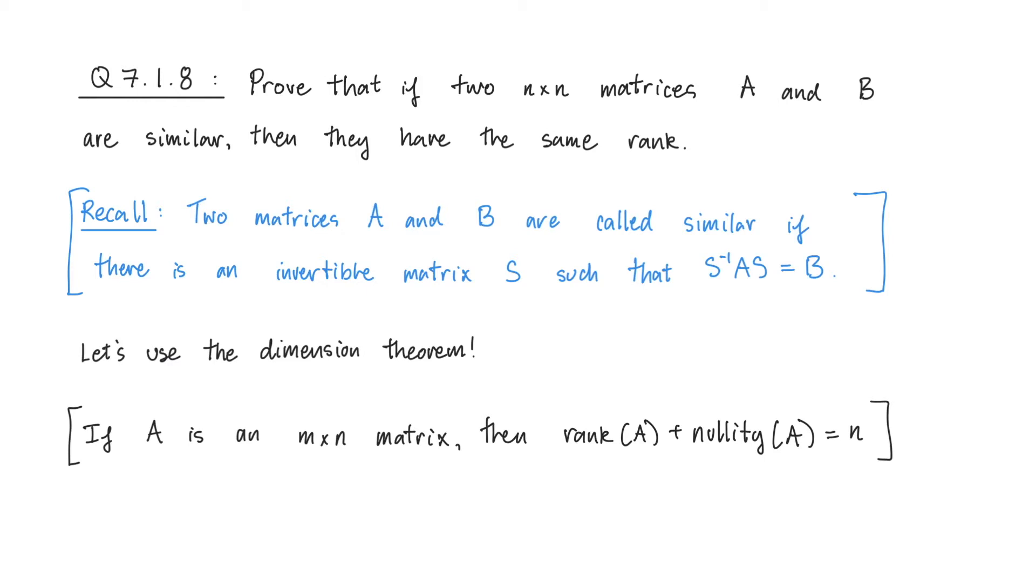One of the things that I first think of when I see this problem is the dimension theorem, or what I like to call the rank-nullity theorem for matrices. We'll see why I say that in section 8. Remember, the dimension theorem says that if A is an m by n matrix, then the rank of A, which is a dimension of the column space, plus the nullity of A, which is the dimension of the null space, is equal to n, or the number of columns.